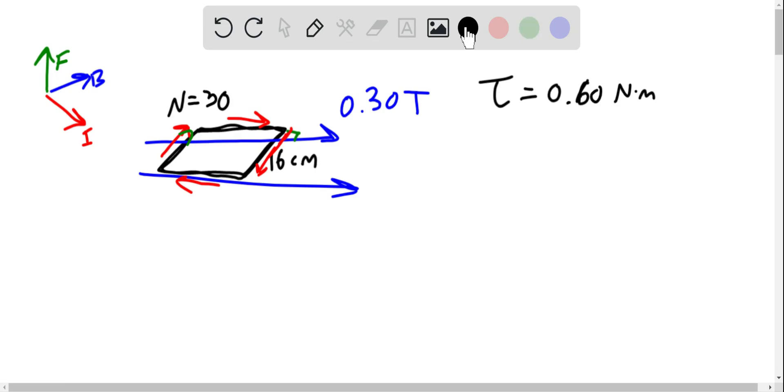And we actually have an equation for torque, which is I·A·B·sin(theta). I is the current. A is the area, so the area of this whole square. B is the magnitude of the magnetic field. And then sin(theta). Theta is the angle between the current and the magnetic field.